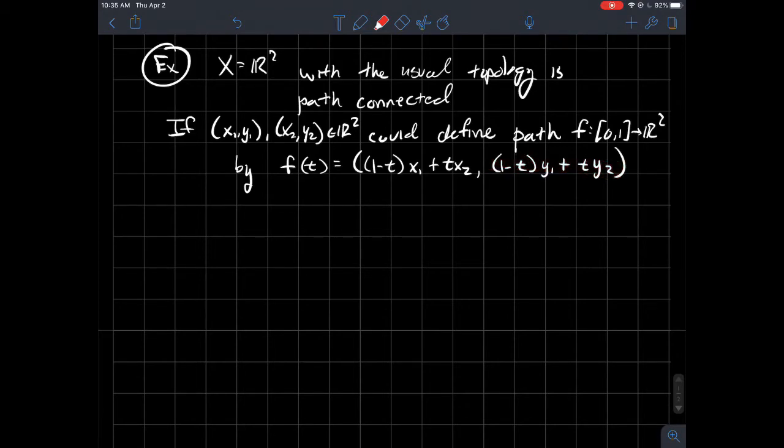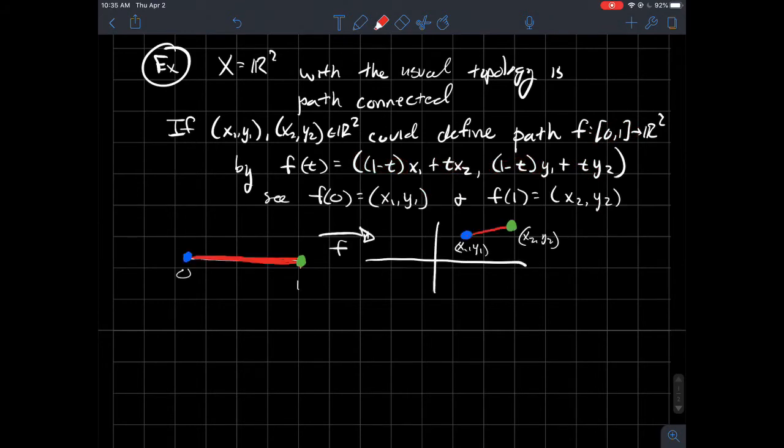So why? What's with the goofy (1-t) in each spot and the t's? Well, it's because t takes values from 0 to 1. So maybe notice when t is equal to 0, if t is 0, then this whole piece just becomes x1, and this is gone. So you just get x1. Similarly, you get y1 out of this, and this is gone.